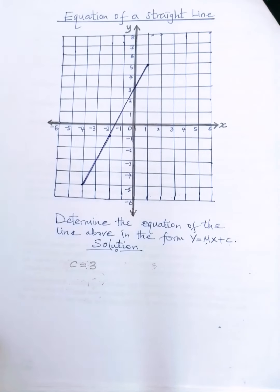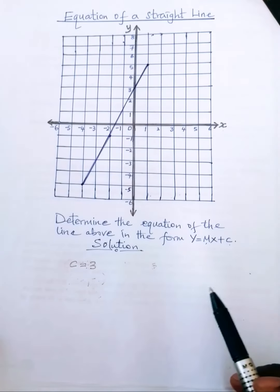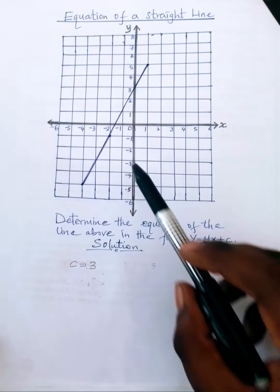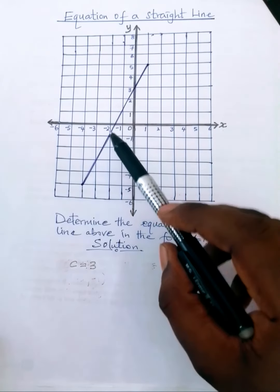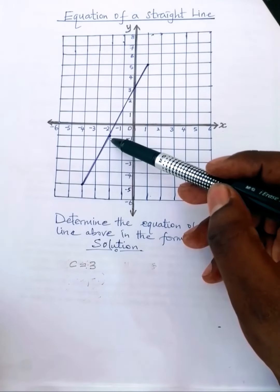Then we go ahead to determine the gradient of the line. To do so, we need to find two points where the line passes through.